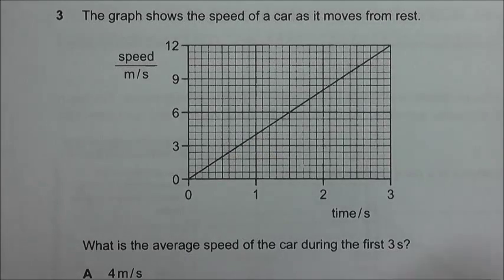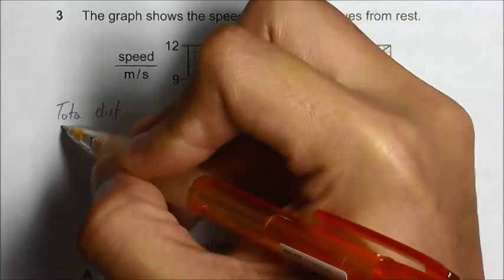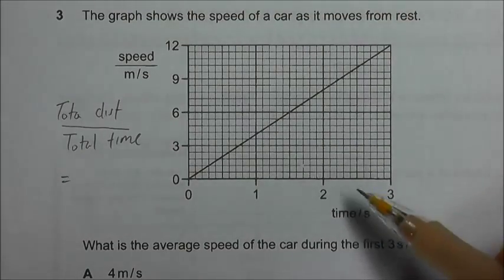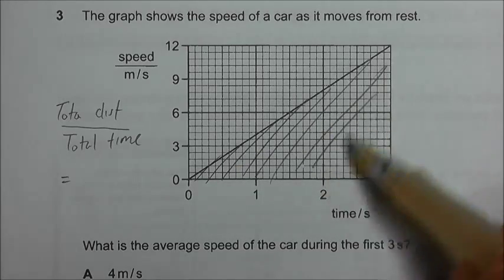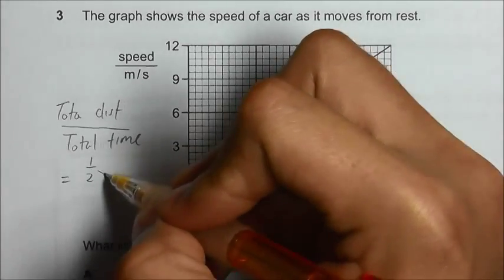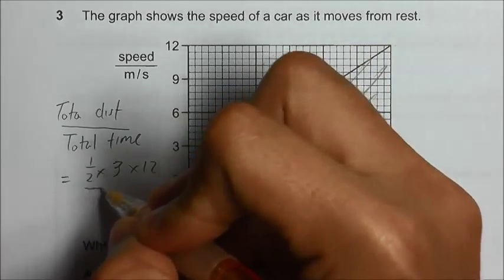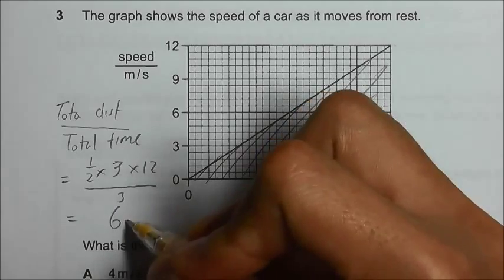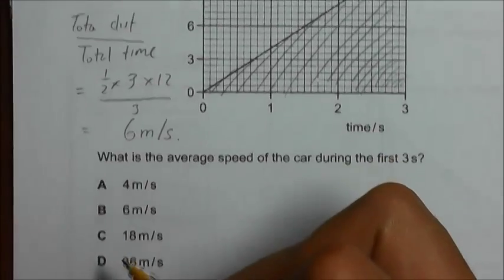To find the average speed, we have to use the formula total distance divided by total time. So the total distance can be found by taking the area under graph throughout the 3 seconds. So this will be half times 3 times 12 divided by the total time taken. We have 6 meter per seconds. Answer B.